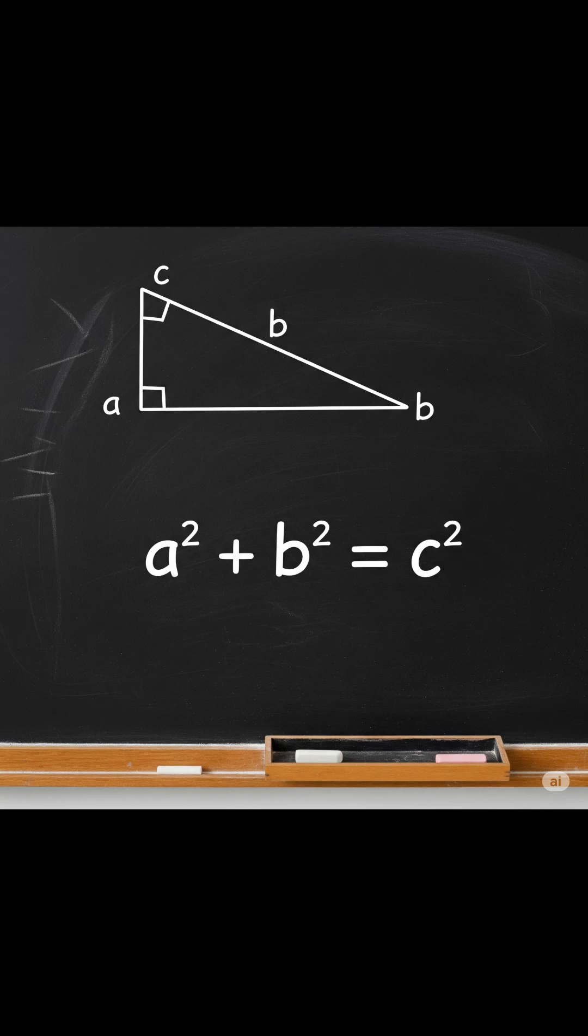Let's prove the Pythagoras theorem using the power of similar triangles. We start with a right-angled triangle A, B, C. The right angle lies at vertex C.